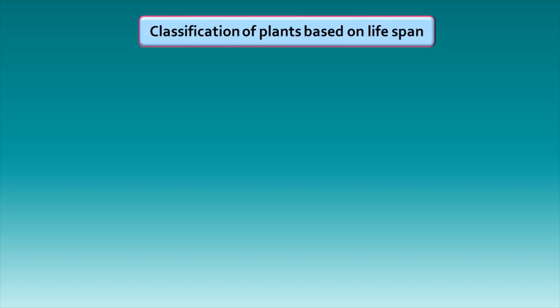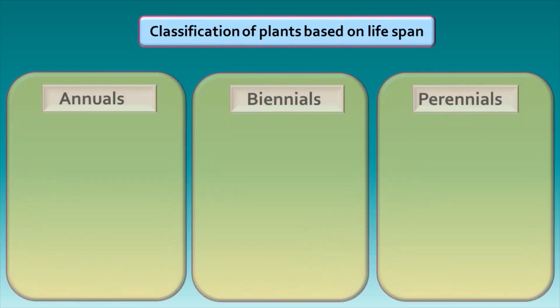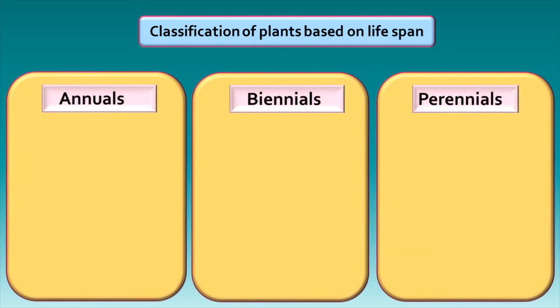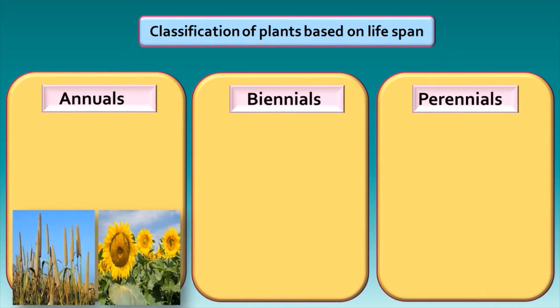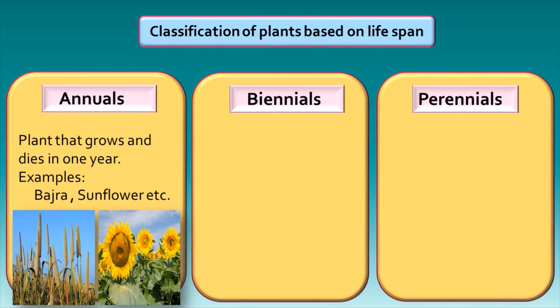On the basis of lifespan, plants are classified as annuals, biennials, and perennials. Annuals: plants like jowar, bajra, sunflower, groundnut, fenugreek, etc. complete their life cycle in one year. That means they grow and die in a year. These plants are called annuals.